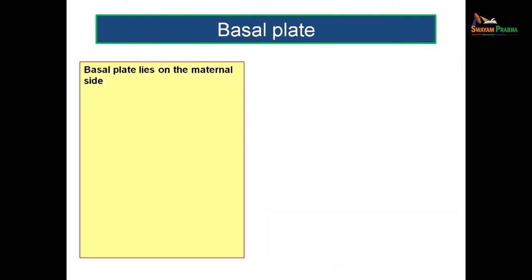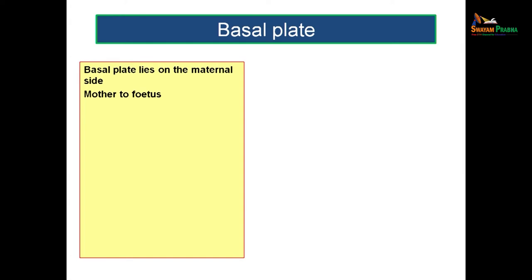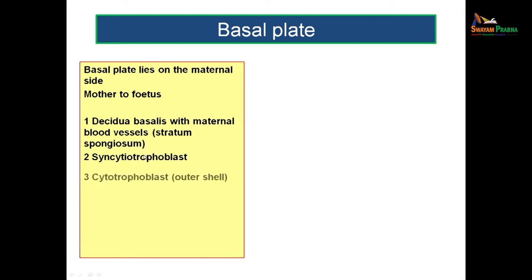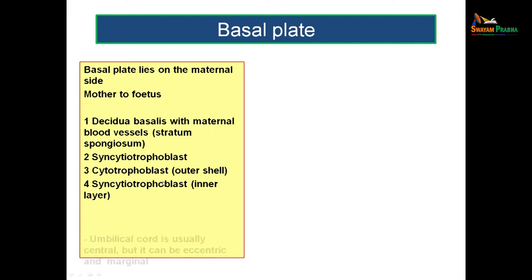Now let us see the other surface — the basal plate, which belongs to the maternal side. Looking from mother to fetus, the first structure is the decidua basalis with maternal blood vessels, which is part of the stratum spongiosum layer of the endometrium. After that, you encounter the syncytiotrophoblast, followed by the cytotrophoblast outer shell, and then another layer of syncytiotrophoblast — the inner syncytiotrophoblast layer.